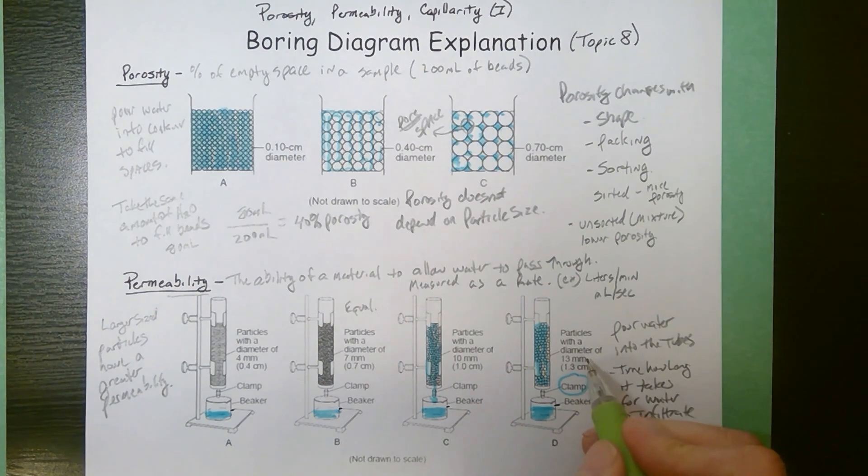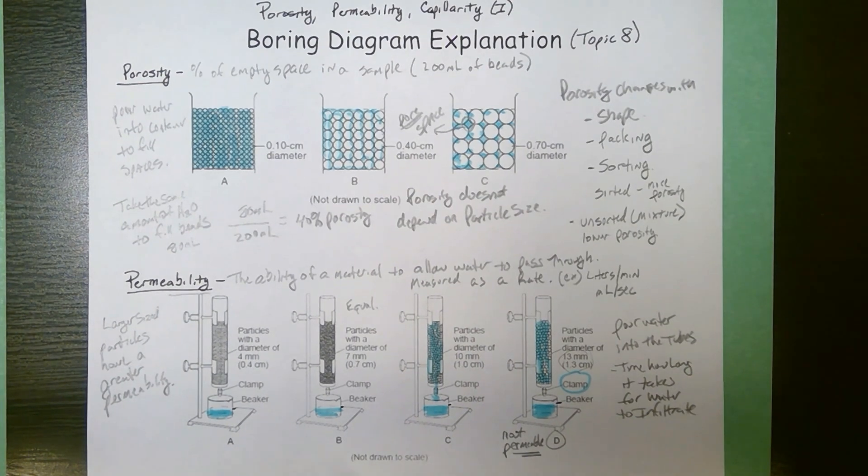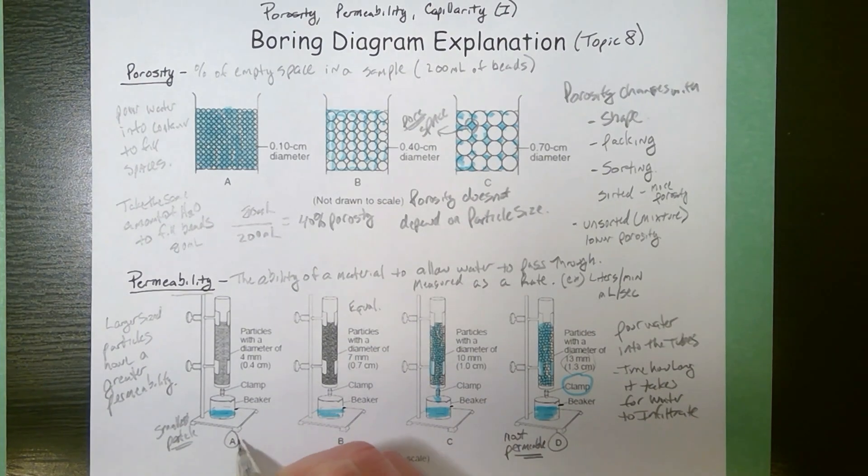So looking at these, since this has the largest size, sample D would be the most permeable. It would take the least time to go through D and sample A, which is the smallest particles. Smaller particles are going to have the least permeability.